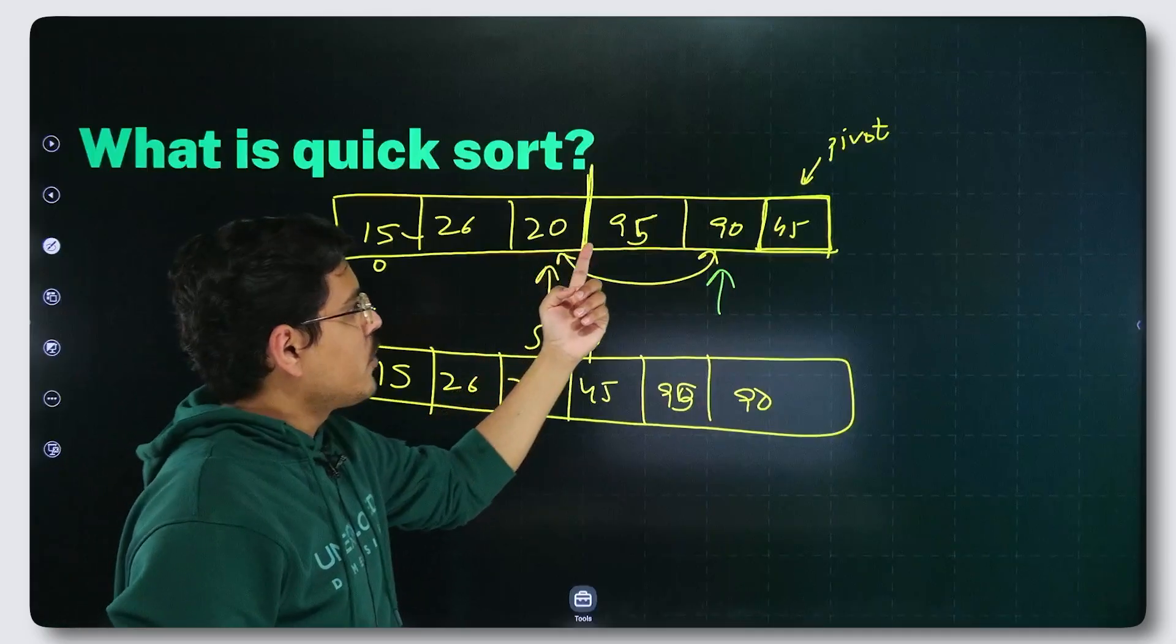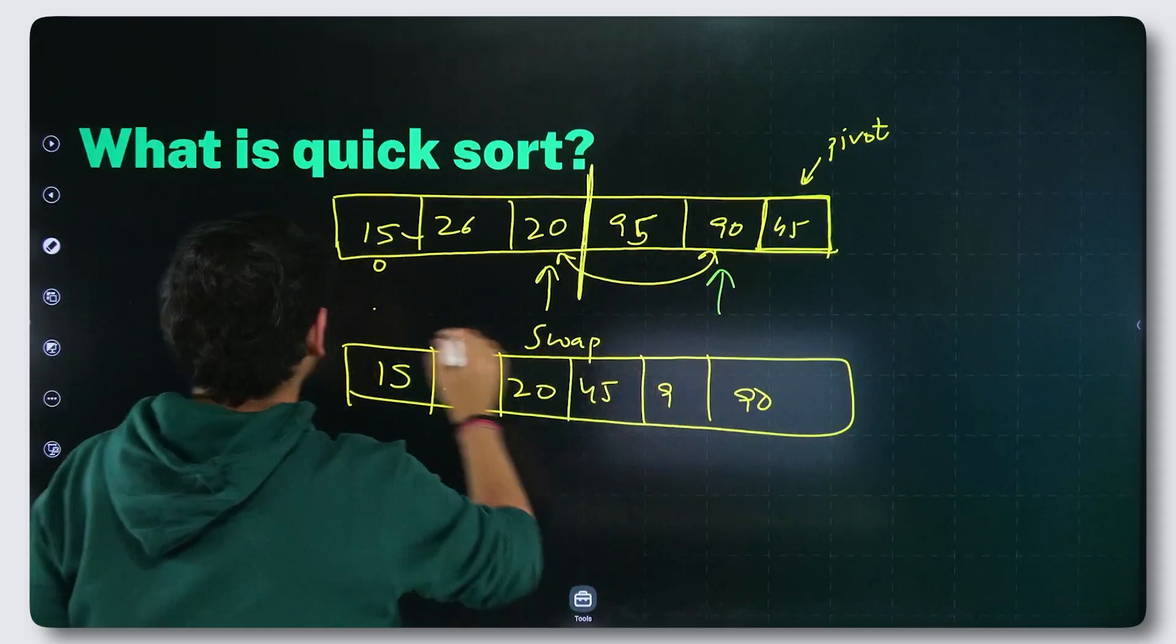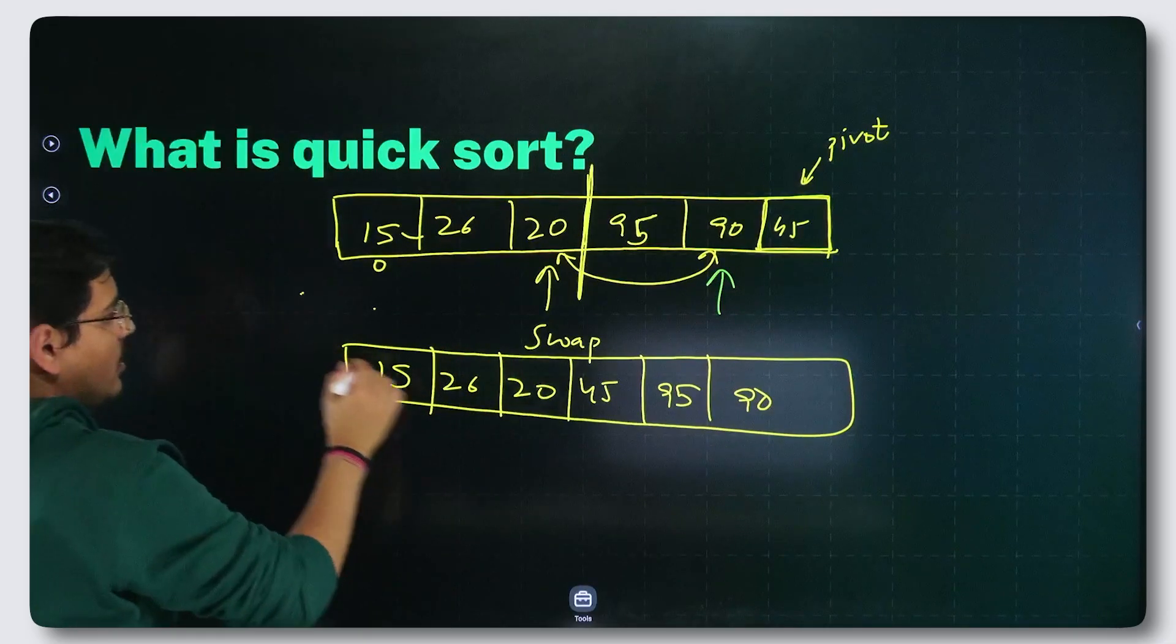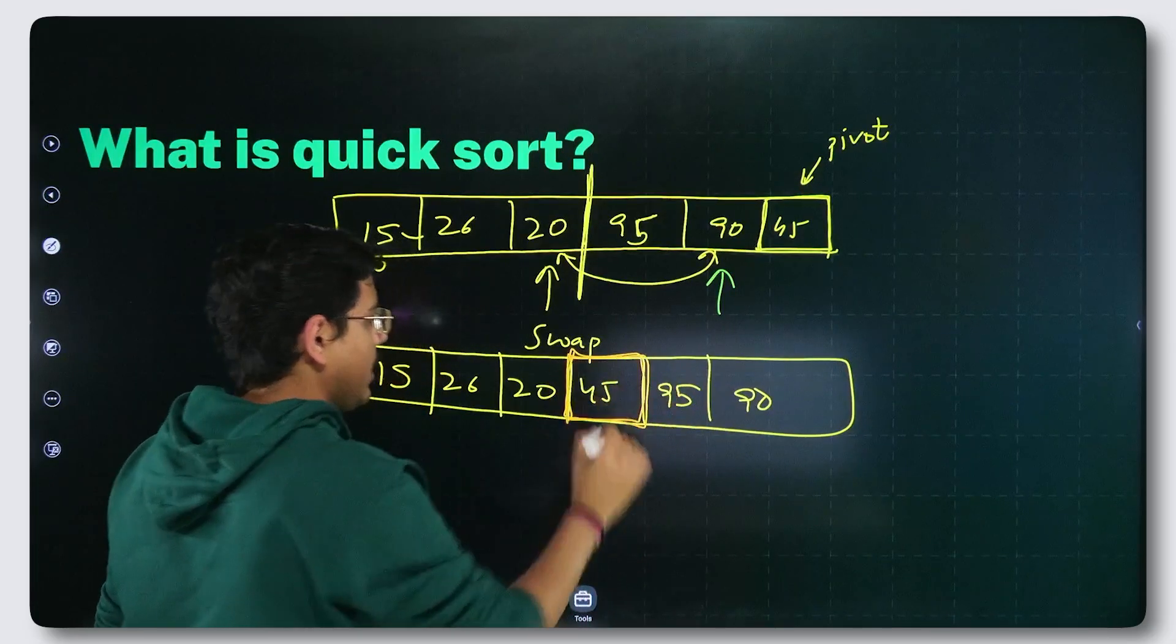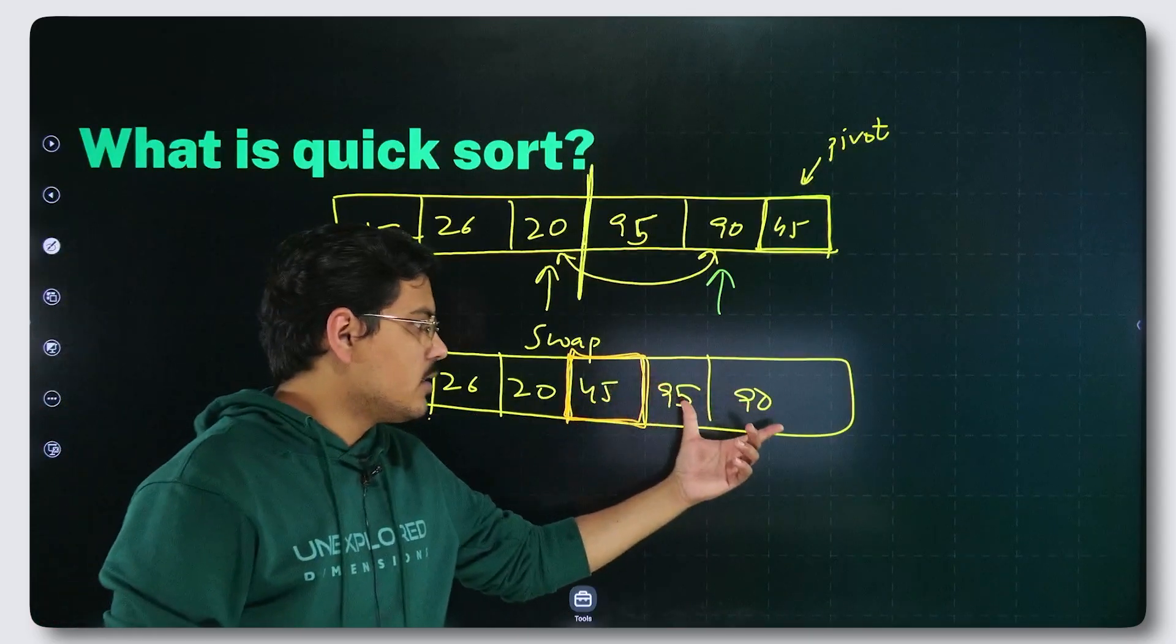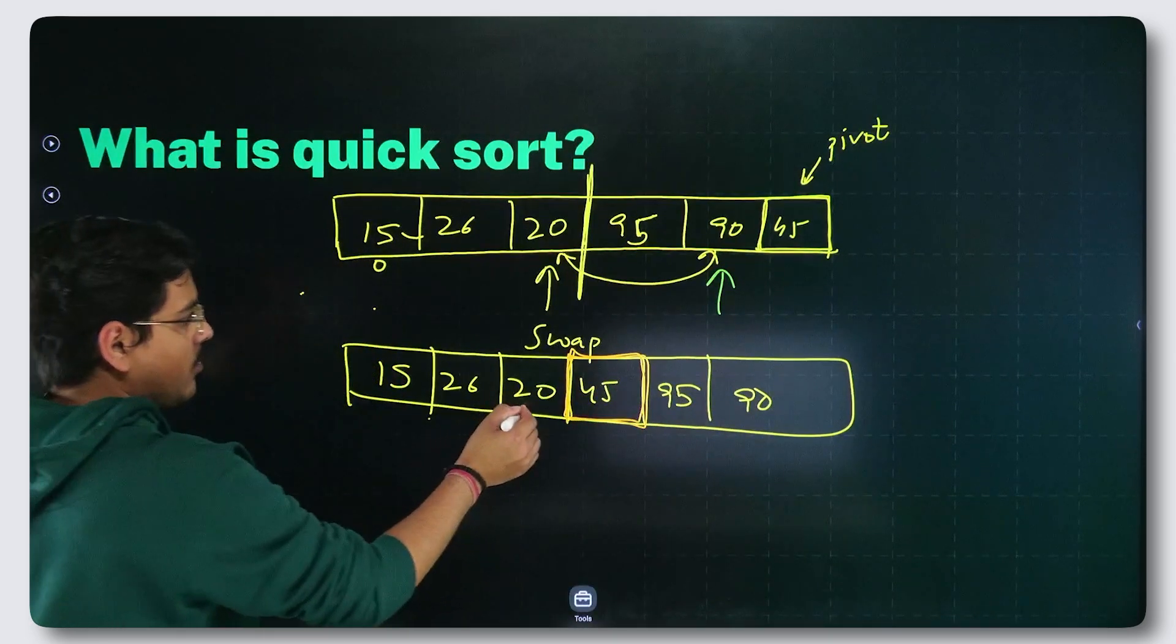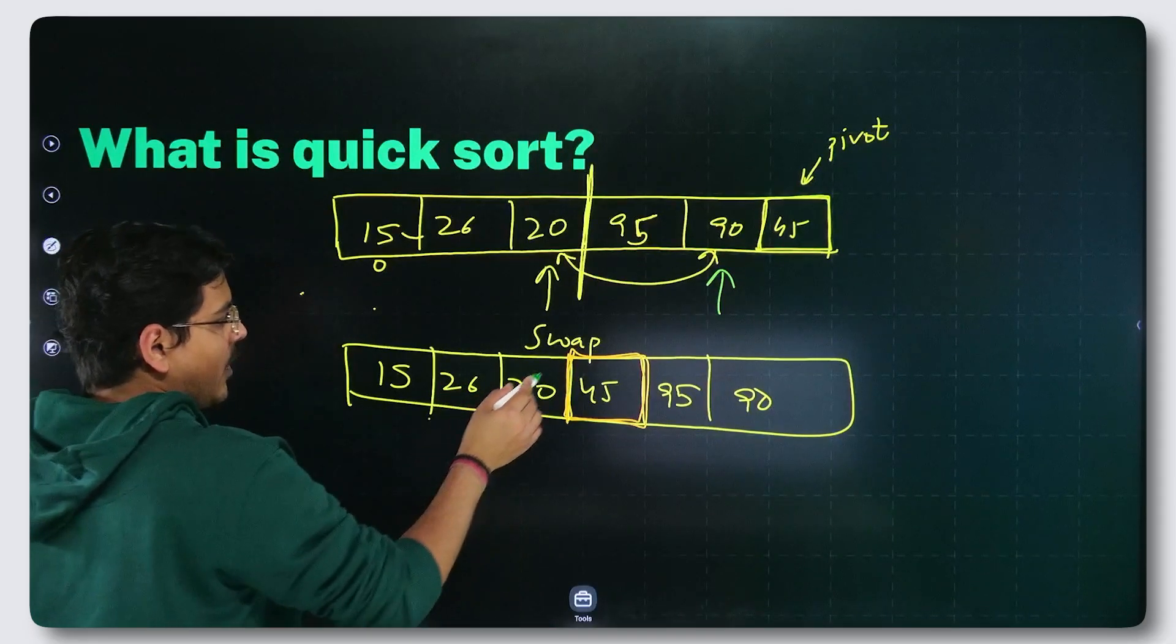Now you knew that this is where partition should happen. So you shifted these two on one side. I guess 95 is not that clear. So I will clear it out. You shifted 95 on this side and 15, 26, 20 on the other side and the pivot is now at its correct place. This is at its correct place. Now you apply the same logic here. You apply the same logic here. Nothing else. And then, you keep on sorting them out. For example, if I do the same thing here. Let us check what happens.